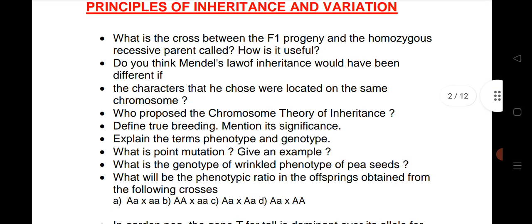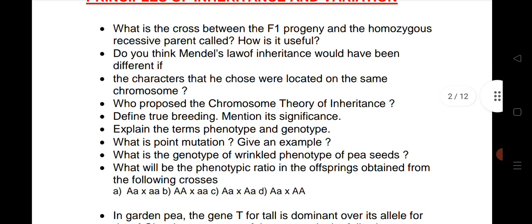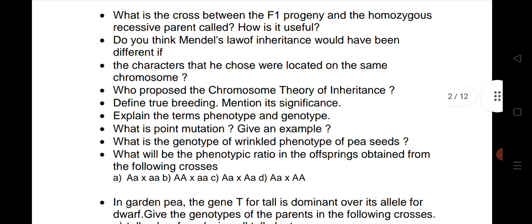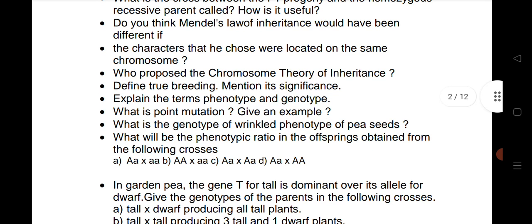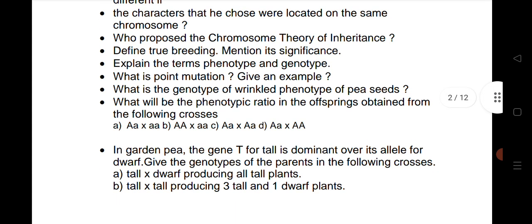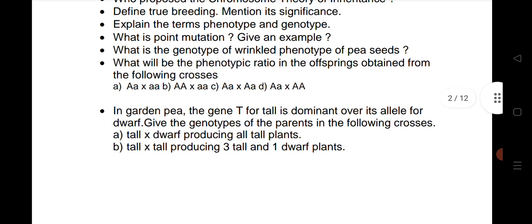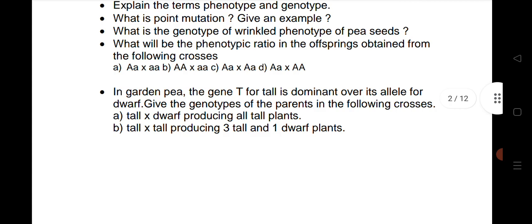Next is Principles of Inheritance and Variation. We have given what is cross between F1 progeny and homozygous recessive parent call, and do you think Mendel's laws of inheritance and different characters that he chose were located on the same chromosomes. These are very important questions. We have given true breeding, chromosome theory, phenotype, genotype, mutations, and phenotypic ratios of offspring.